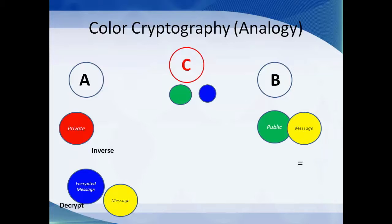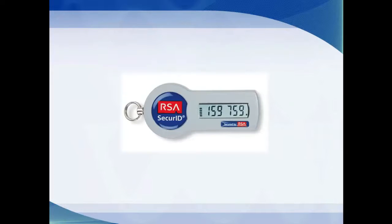One of the most secure cryptographic systems is RSA cryptography. To date, no one has decrypted the RSA cryptographic system — it is quite strong and secure. This device, which many of you might have seen, is designed by the company RSA and is called a hard token. It is the instrument people use to get the public key and retrieve information.